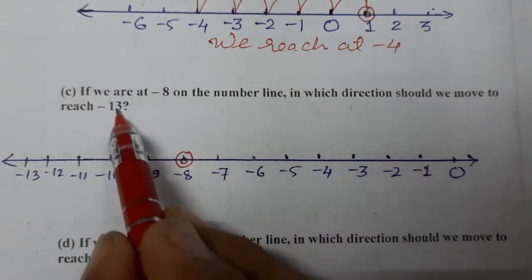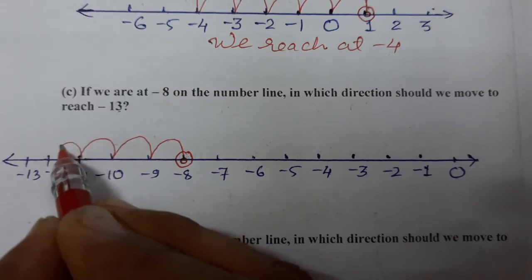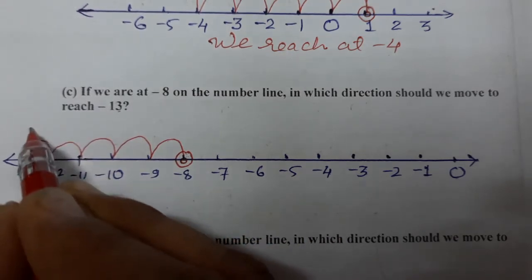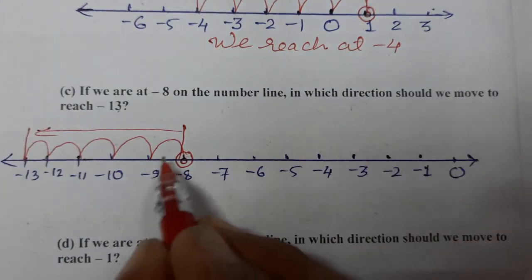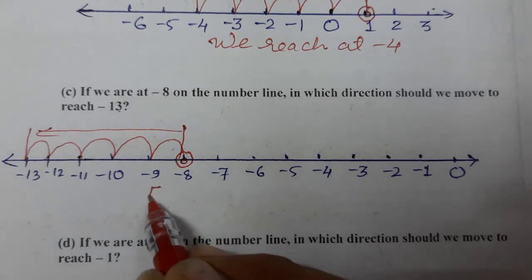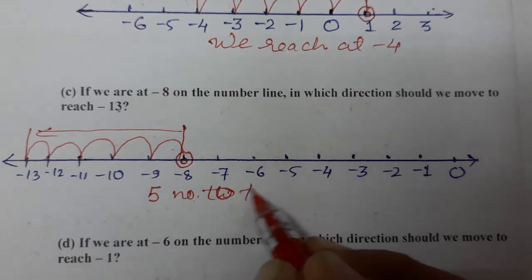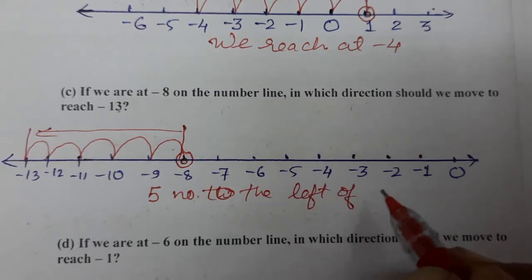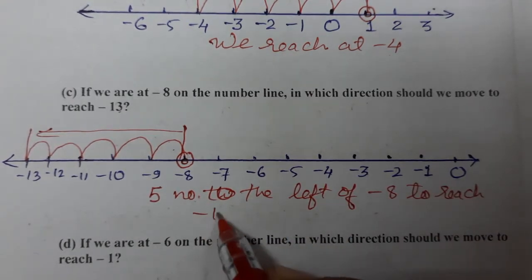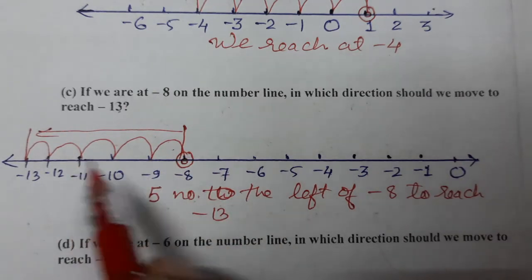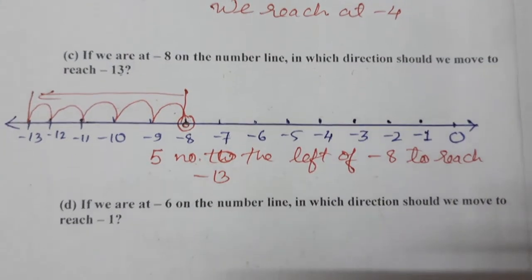We need to move to reach minus 13. Counting: 1, 2, 3, 4, 5. So we move 5 numbers to the left of minus 8 to reach minus 13. This completes the D part.